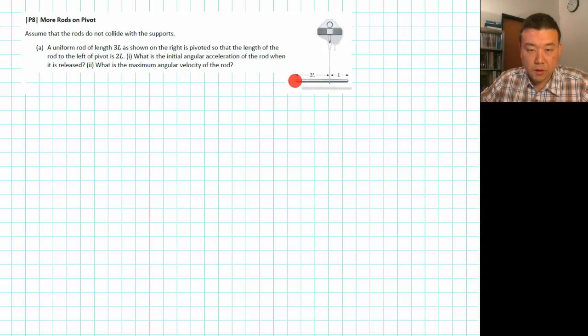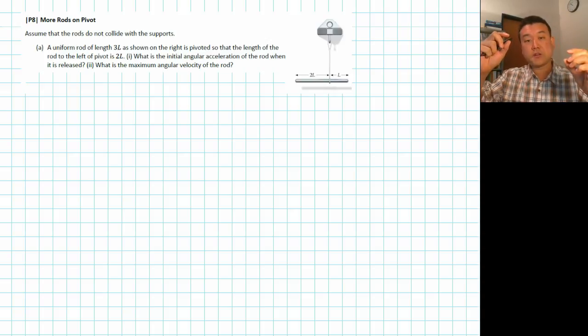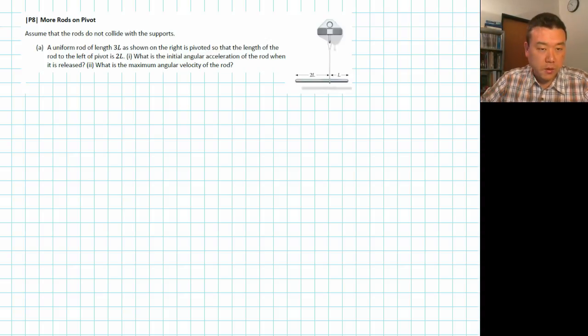This problem involves a rod that's being supported at a point that's not the center of mass of the rod. So you have an intuition for it, when you let go of this rod, it'll start to rotate. So that's what the question is dealing with. When you look at the question, read part one, what is the initial angular acceleration of the rod?